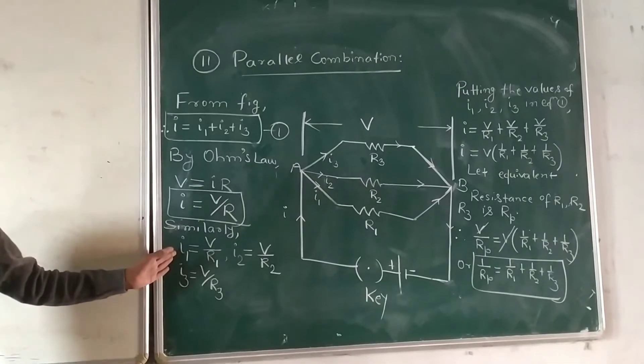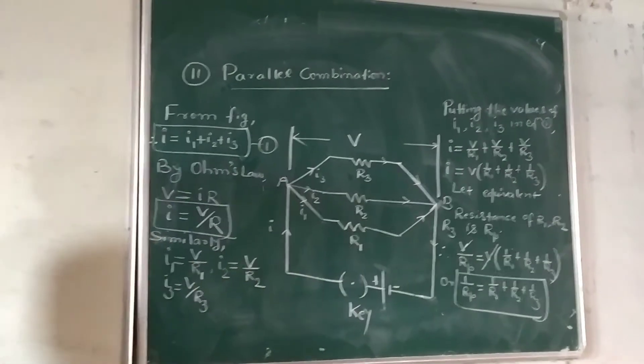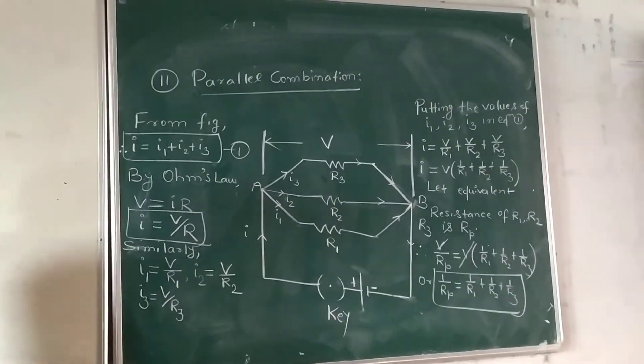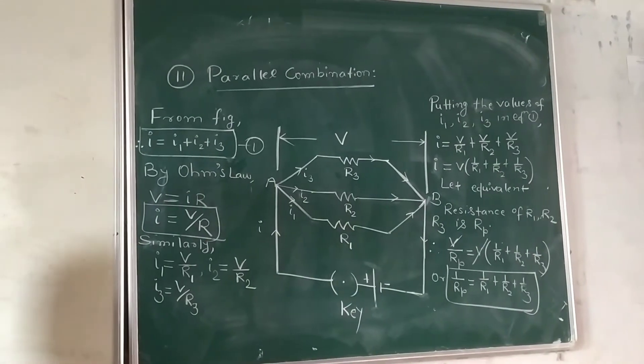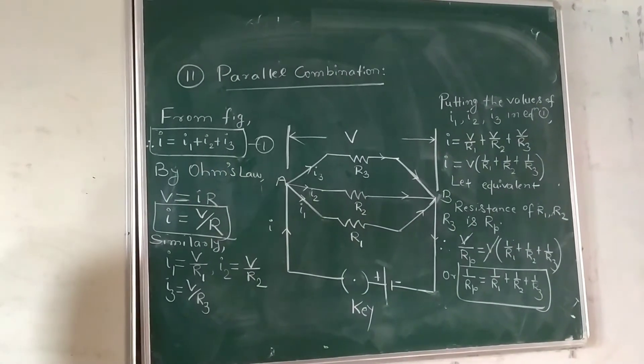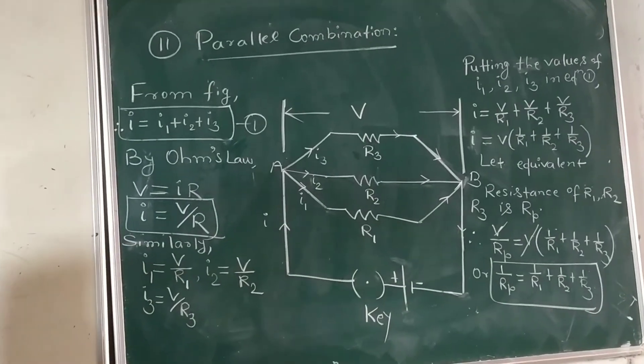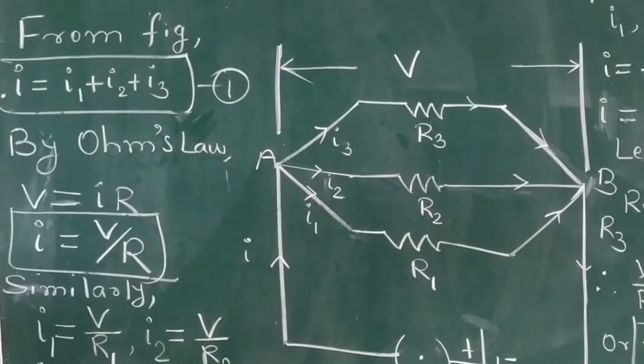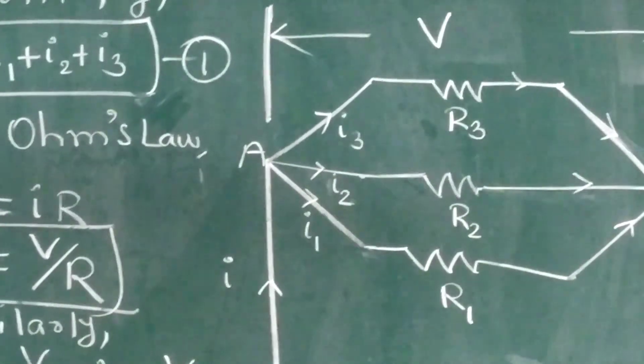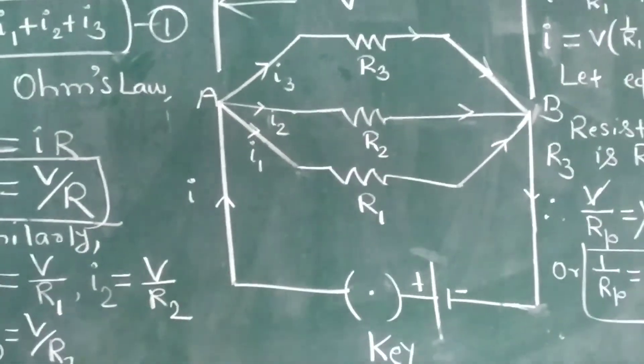The reciprocal of the equivalent resistance is equal to the sum of the reciprocals of each individual resistance.